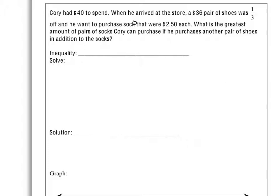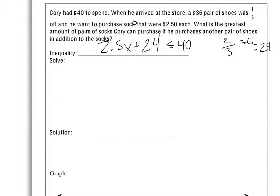So basically, how many socks can he buy if he buys a pair of shoes? Corey has $40 to spend, so he can spend less than or equal to $40. This was an inequality. He buys a pair of shoes that's one third off, so two thirds of $36 — which is what's remaining — equals $24. So we have 2.5x, the amount of socks, plus $24. A lot of people struggled to write that inequality, and then struggled to give the actual solution.